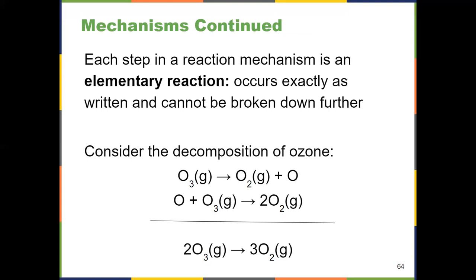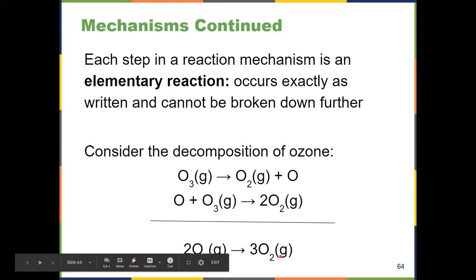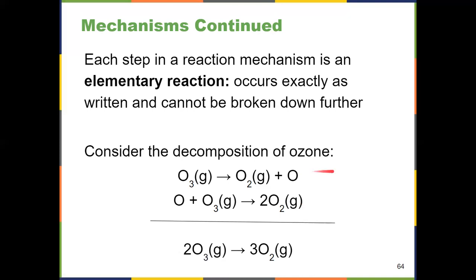When we break reactions down into individual steps, those steps are called elementary reactions — an important concept. An elementary reaction means that it occurs exactly as it's written; we can't simplify it any further. So down at the bottom, the overall reaction is not an elementary reaction. We simplify and break reactions down into their individual steps when we're looking at mechanisms. Each individual step is an elementary reaction occurring exactly as written.